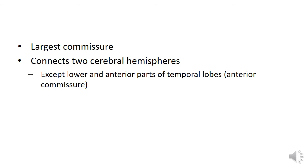In that class, we saw that the corpus callosum is a type of commissural fiber. In fact, it is the largest commissural fiber and it connects the two cerebral hemispheres across all parts except the lower and anterior parts of the temporal lobes, which are connected by the anterior commissure.